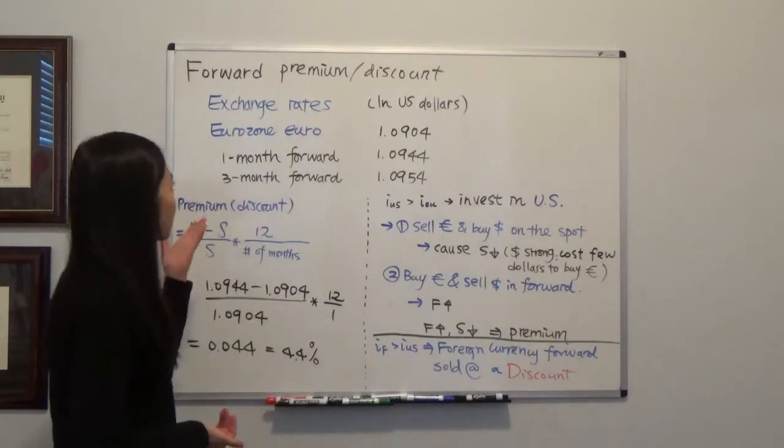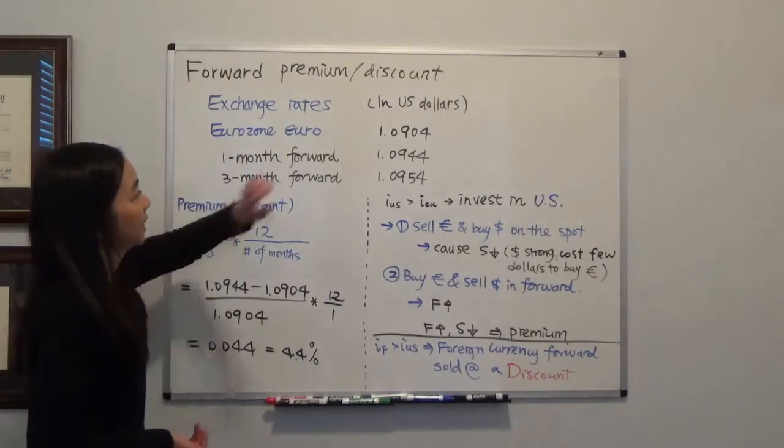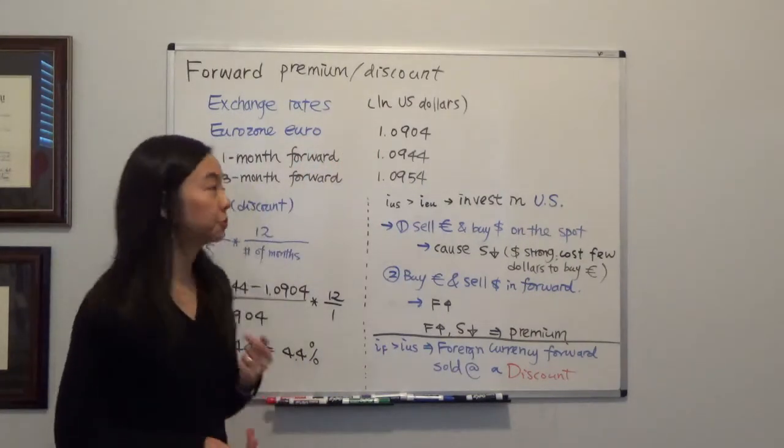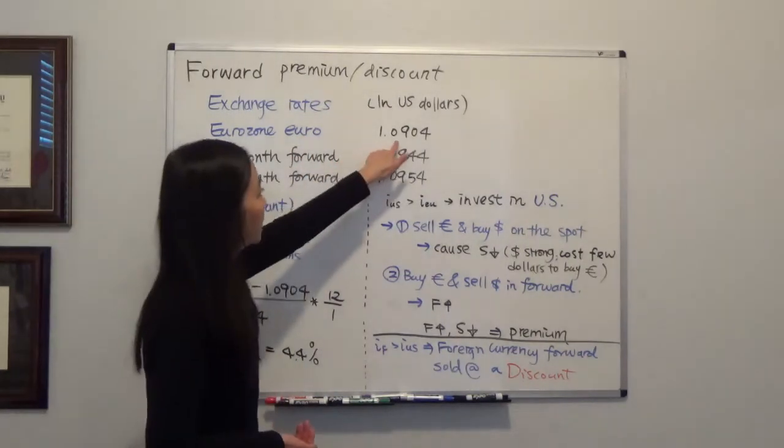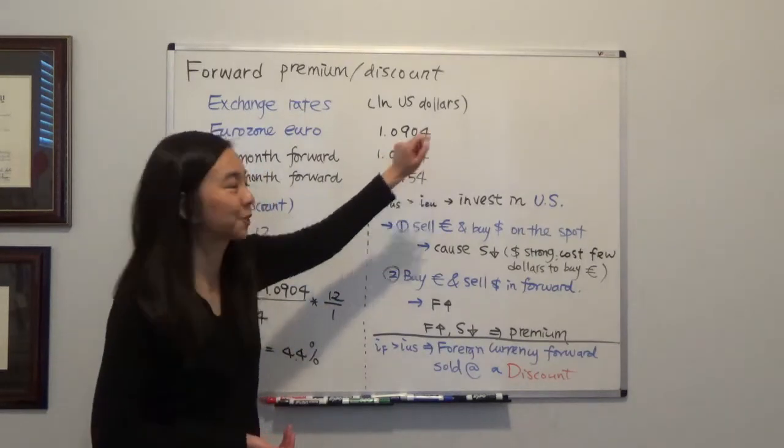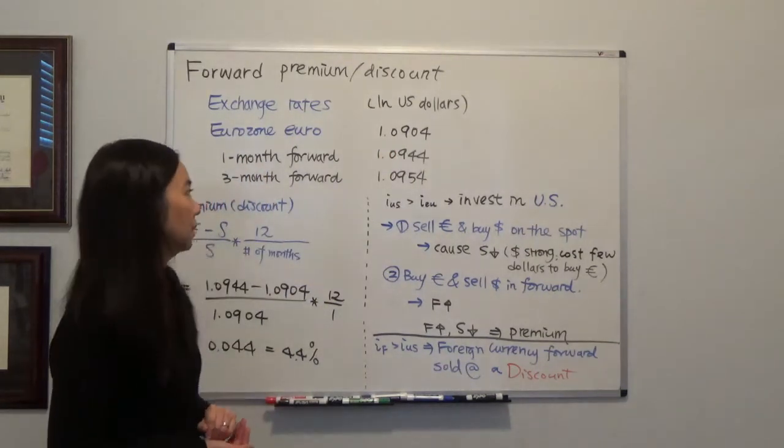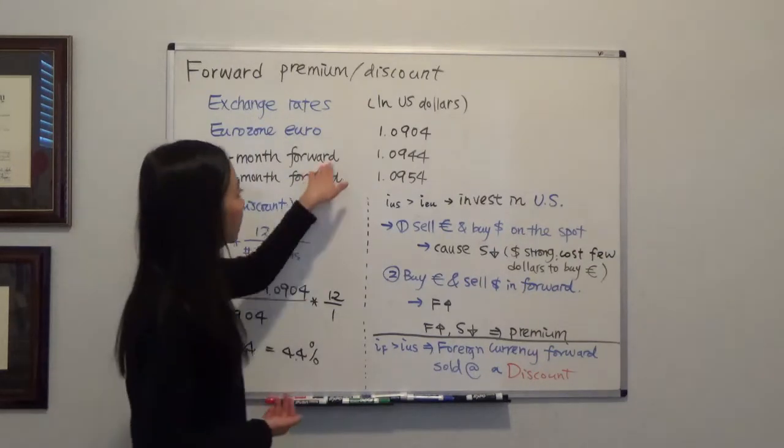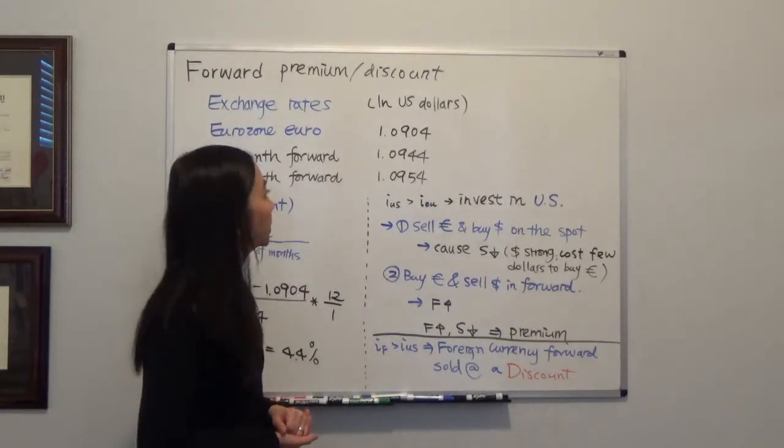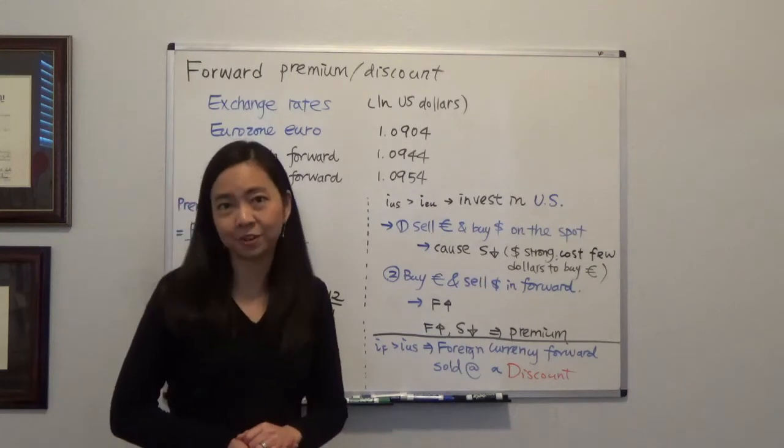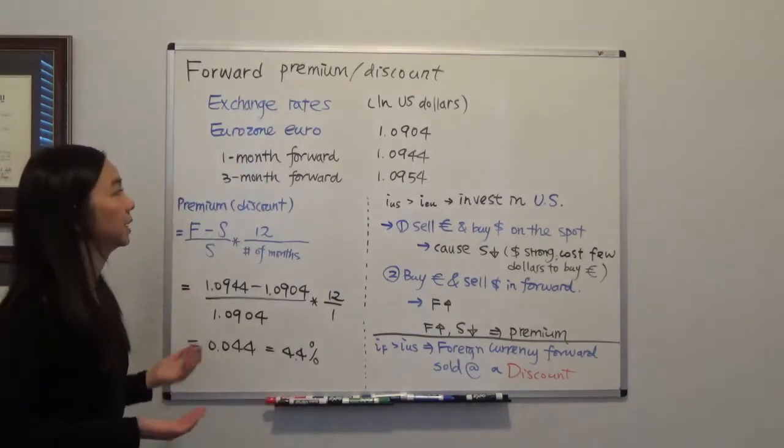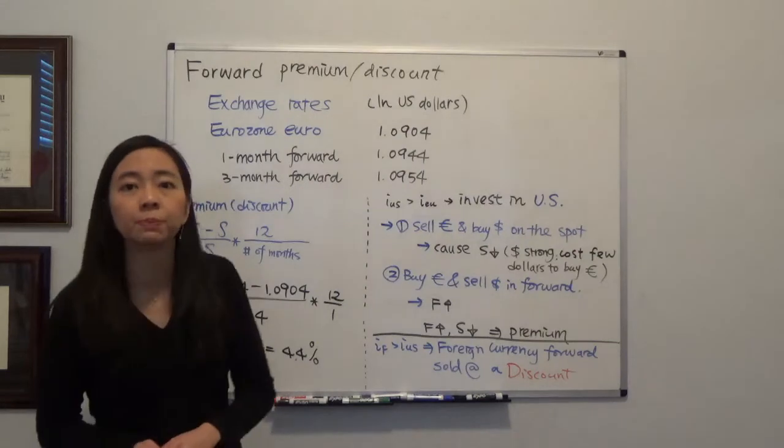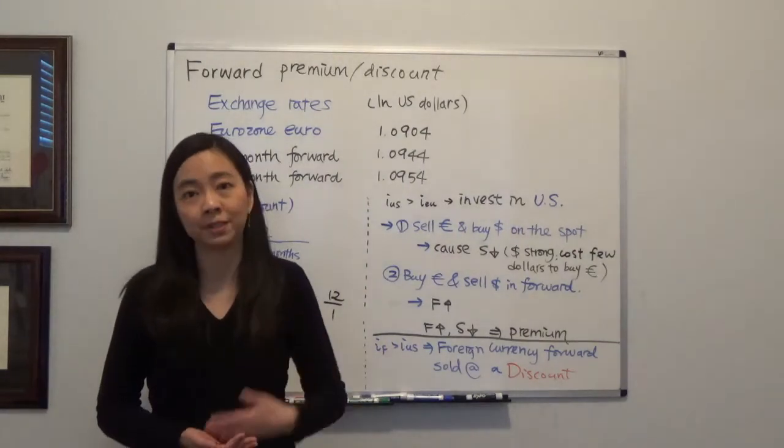So suppose this is a spot rate of euro in US dollars, meaning to buy a euro you need to spend 1.0904 US dollars on the spot, and that's the price of one month forward being sold at 1.0944 US dollars. We want to calculate whether the euro forward is being sold at a premium or discount.